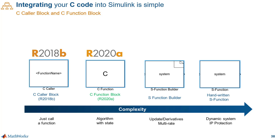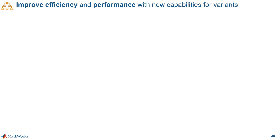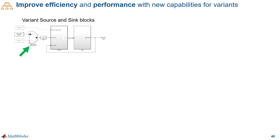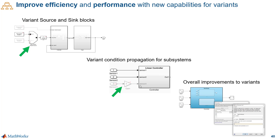The goal with these new alternatives is to simplify the C code integration process. Another important part of componentization is variants, which can help you improve efficiency and performance for some designs. We have new capabilities in this area: variant source and sync blocks, variant condition propagation for subsystems, and other improvements to variants.